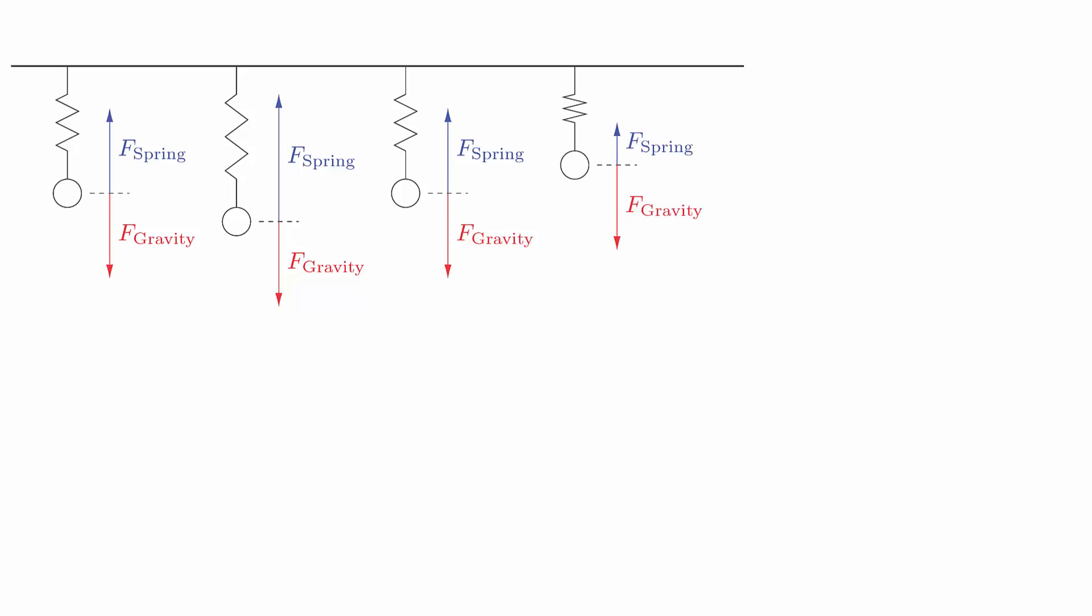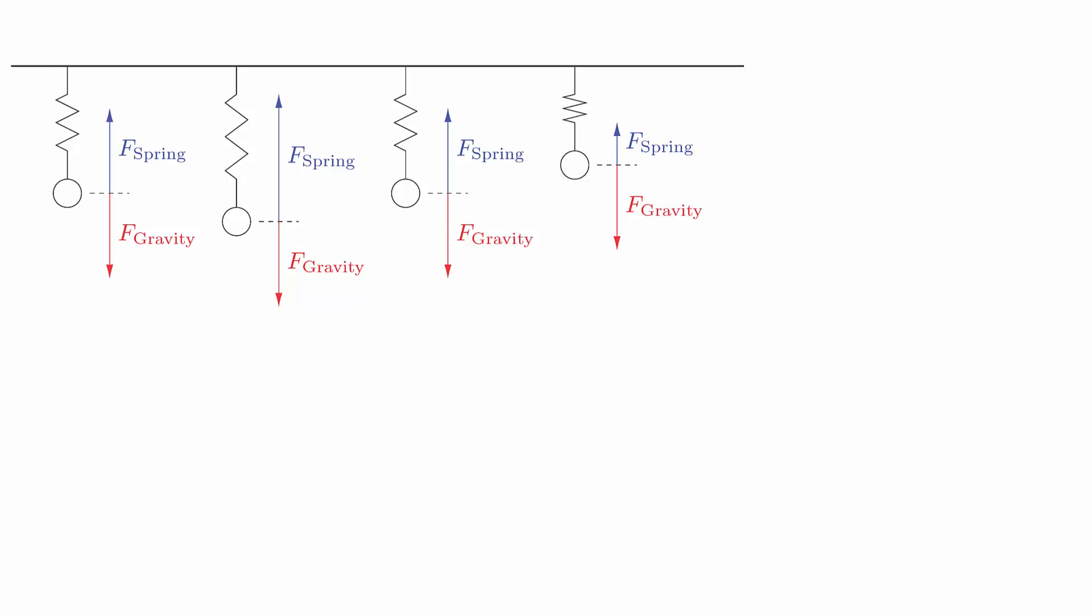But now the spring is compressed a little bit so it isn't pulling up as much. And now gravity is pulling down on the mass more than the spring is pulling up on it, so it slows down and starts to fall again. And this cycle repeats over and over again.